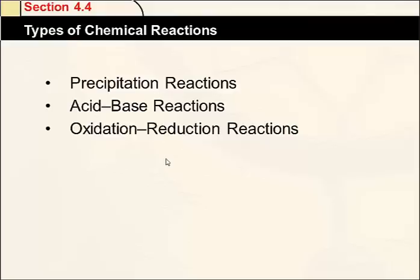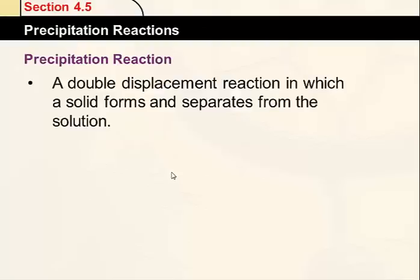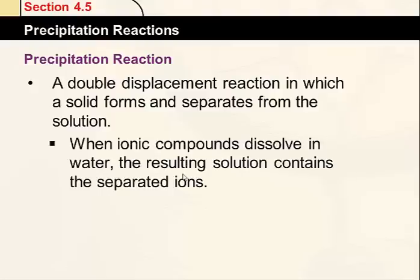Right now I just want to talk about precipitation reactions and how those work. A precipitation reaction is a type of double displacement reaction in which a solid forms, and the rest of the stuff remains in solution. What happens is two ions, a positive and a negative ion, do not dissolve in water, so they form a precipitate that sits at the bottom of the solution. The rest of the solution contains the ions that do dissolve in water.